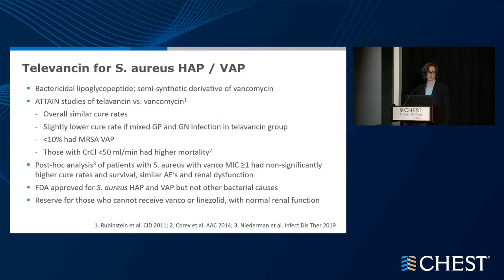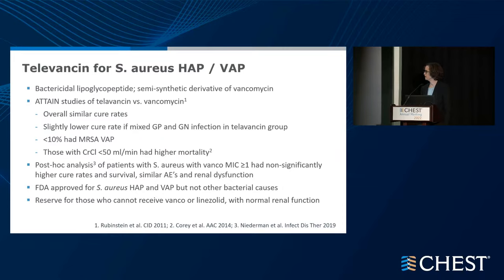Televancin is another alternative. The ATTAIN study in 2011 compared televancin and vancomycin; it wasn't strongly recommended in the guidelines because a small percentage had MRSA VAP, and patients with creatinine clearance less than 50 had higher mortality with televancin. However, a recent post-hoc analysis of patients with Staph aureus with a vancomycin MIC over one found that televancin had a non-significantly higher cure rate and survival compared to vancomycin with similar adverse events. It is FDA-approved for Staph aureus HAP and VAP, but not for other causes — reserve it for those who cannot receive vancomycin or linezolid and who have normal renal function.